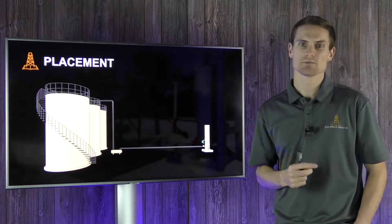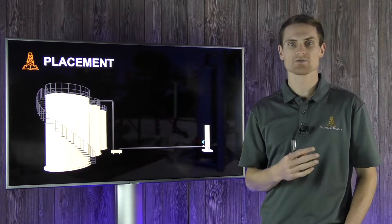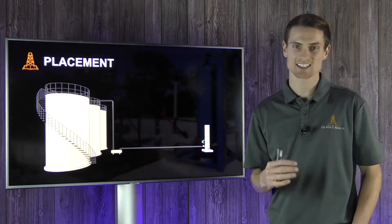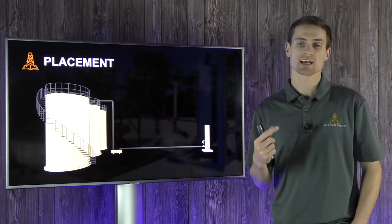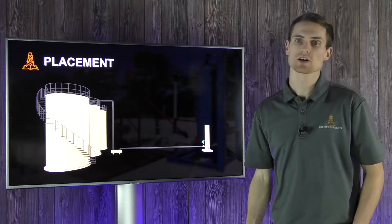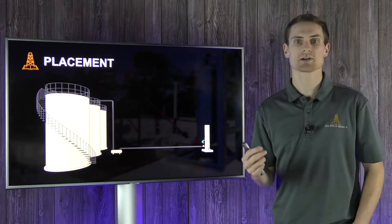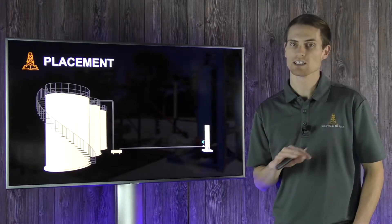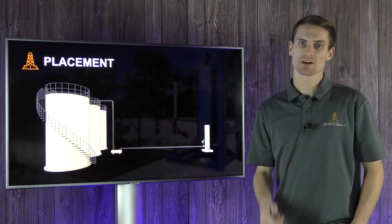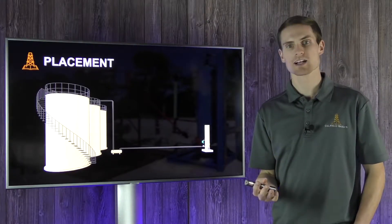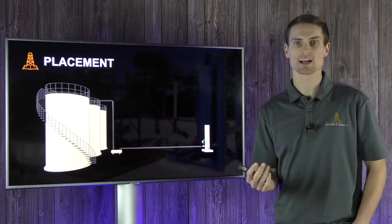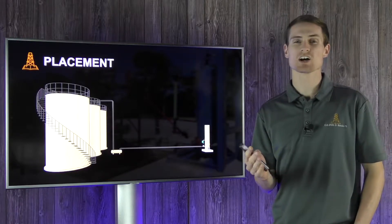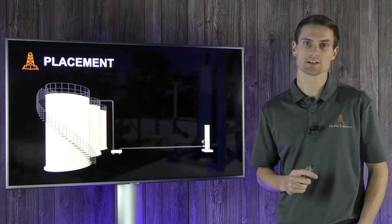As with any combustion device, it's important that it's placed far away from any possible source of combustible gases, such as well heads, tanks, gas lines, et cetera. Corey recommends putting the combustor at least 70 to 80 feet away from any potential source. Open flares would have to be much further away due to their higher temperatures and radiant heat. This distance requirement may also vary depending on your state regulations.